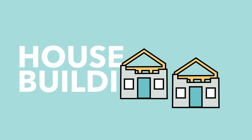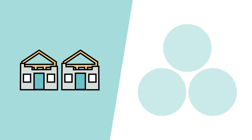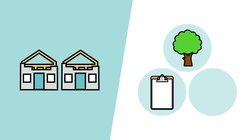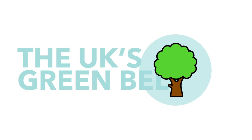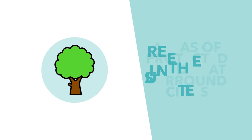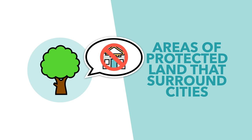So why hasn't the UK built enough houses? There are probably three reasons: the green belt, the UK's case-by-case planning system, and the collapse of social housing. Let's start with the first one — the green belt. Green belts are areas of protected land surrounding cities in which housing development is prohibited. Unsurprisingly, green belts make housing more expensive because they restrict the supply of housing.